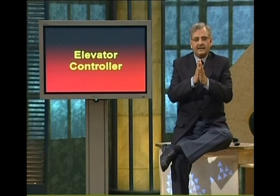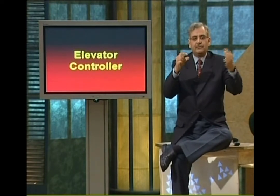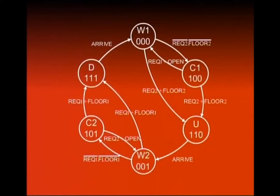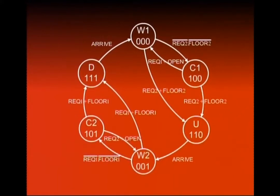State diagram mein elevator controller circuit — jo ek sequential circuit hai — ki 6 states hain. Pehli state W1 (Wait 1), C1 (Close 1), U (Up), W2 (Wait 2), C2 (Close 2), aur D (Down). W1 ke neeche 000 likha gaya — leftmost 0 door output (open), second 0 motion output (stationary), third 0 direction (up). C1 ke neeche 100 — door closed, stationary, up direction.